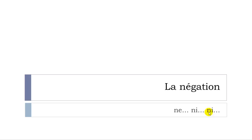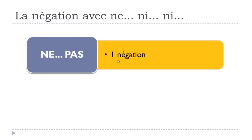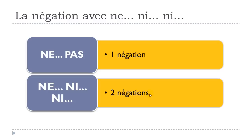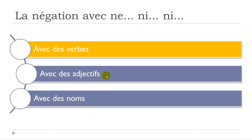LA NÉGATION — and more precisely, the famous NE... NI... NI. Normally when we talk about la négation in French we have two parts: NE and PAS. When we talk about NE PAS, that's une négation. But it's possible to have deux négations, and in that case the structure changes — we use NE, then NI, then NI again. We'll see examples with verbs, adjectives, and nouns.